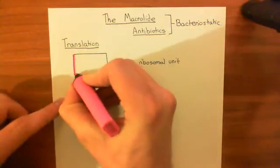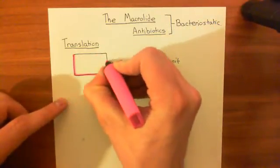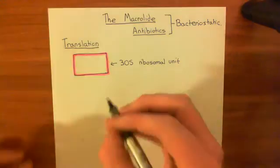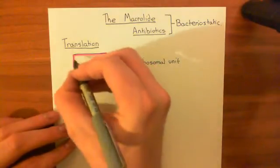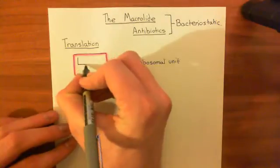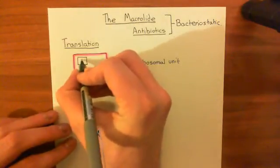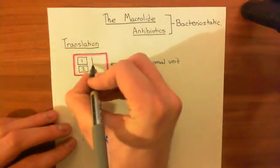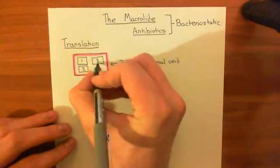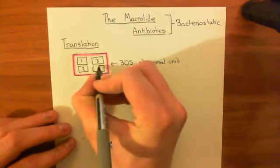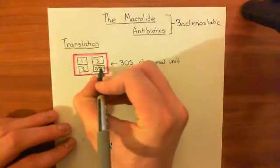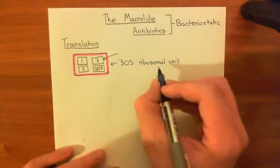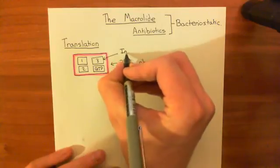I'll outline this 30S ribosomal subunit in purple. Now, bound initially to the 30S ribosomal subunit are three initiation factors. Here is initiation factor one, here is initiation factor two, here is initiation factor three. And finally, there's also a molecule of GTP — guanosine triphosphate — bound as well. These little boxes bound to the 30S ribosomal subunit are initiation factors.